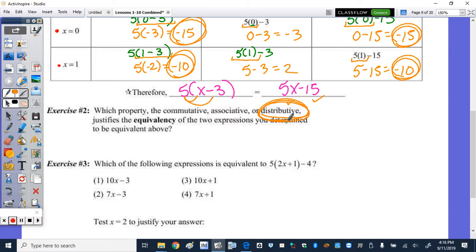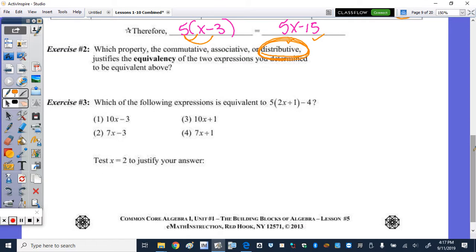So in number 3, which of the following expressions is equivalent to 5 times the sum of 2x and 1 minus 4? So let's start by using the distributive property. 5 times 2x is 10x. Keep the plus sign. 5 times 1 is 5. And then we're going to subtract 4. Now the only like terms there are the 5 minus 4. So I'm going to combine those. And we have 10x plus 1.